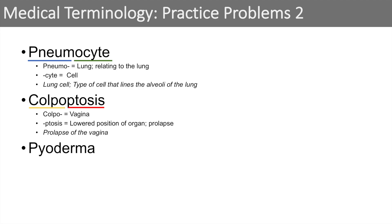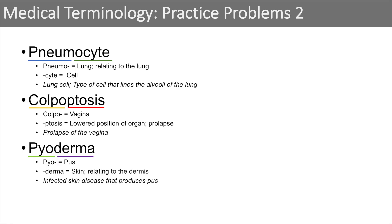The next word is pyoderma. We just break it down into pieces — this is the easiest way to look at any medical term. Pyo means pus. And derma means skin — you can think of dermis or dermatology. Derma means skin or relating to the dermis. So pyoderma, when we put that together, means an infected skin disease that produces pus. It's a disease of the skin that produces pus.